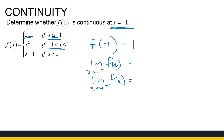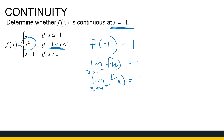From the negative side, those are values of x smaller than minus 1, so we use the first constant piece, giving a value of 1. From the positive side, those are values of x larger than minus 1, so we use the second piece: minus 1 squared, which is also 1. Since both one-sided limits are equal, we conclude that the limit as x approaches minus 1 of the function equals 1.